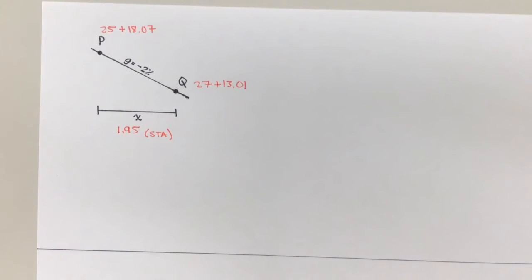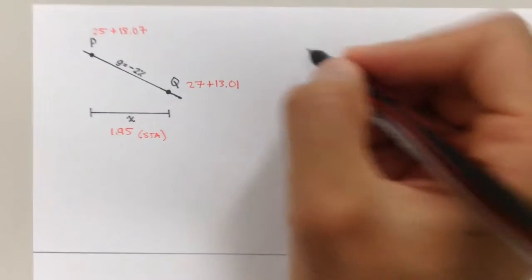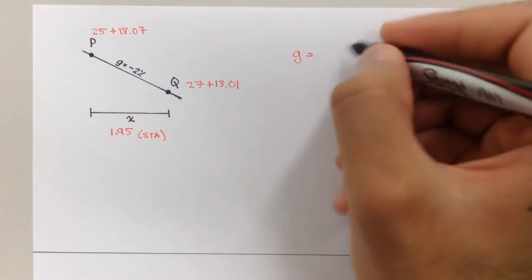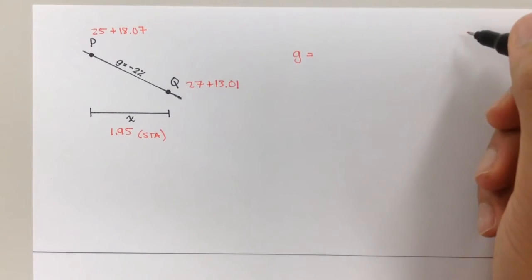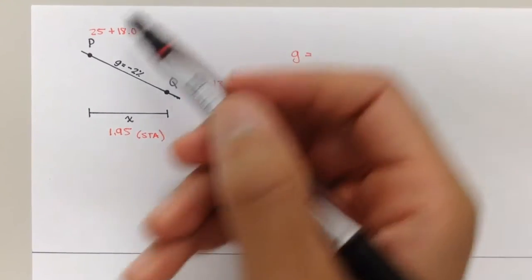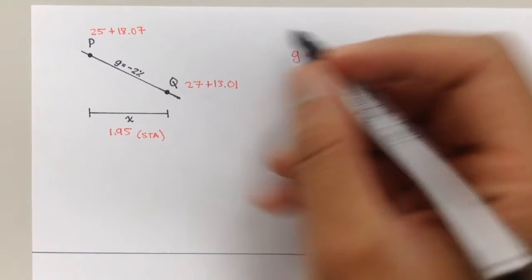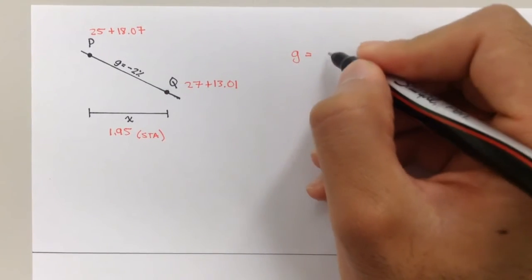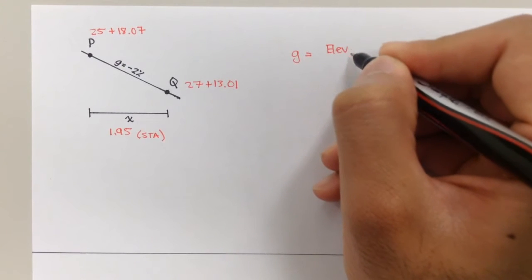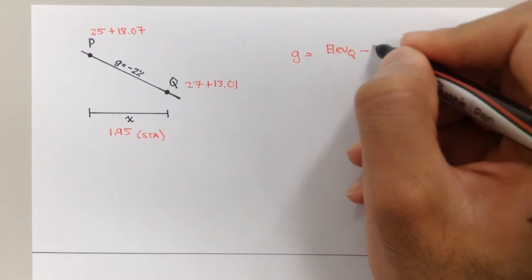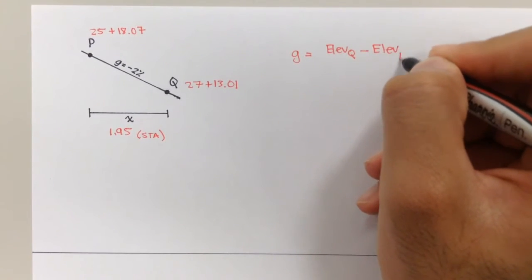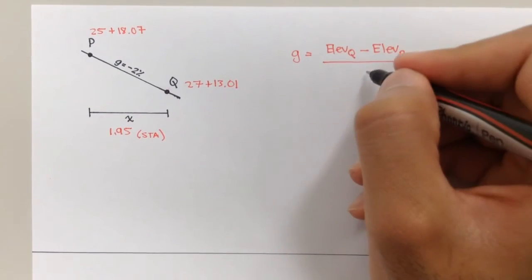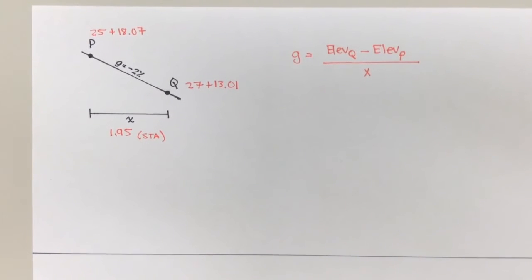All right? And when we find grade, remember our equation is grade is equal to the change in elevation over the distance. And if we go left to right, our final elevation would be point Q. So elevation of Q minus elevation of P divided by the change in or just the distance, right? Or the change in distance.